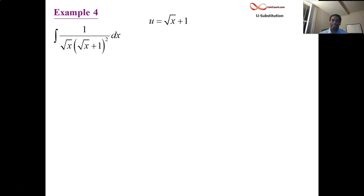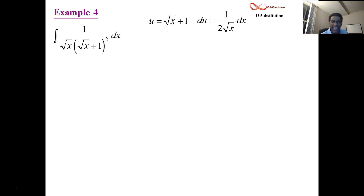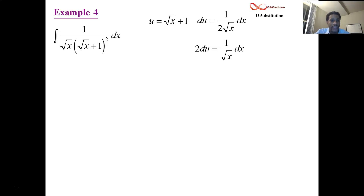What is the derivative of root x? If you need to, represent it as x to the one half and do the power rule: 1 half x to the negative 1 half. But know that root x's derivative is 1 over 2 root x. Look at what we have left for the rest of the integral after calling root x plus 1 our u — the rest is 1 over root x dx. We're looking at exactly that, but there's a constant to worry about. Multiplying both sides by 2 gives 2 du equals 1 over root x dx. That's the replacement for 1 over root x dx: 2 du.